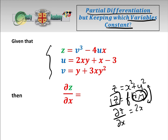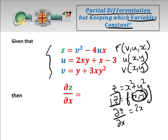But what happens if we have a question like this, where z is a function of v, u, and x, where u is a function of x and y, and v is also a function of x and y? So how do we go about working out what the partial derivative of z with respect to x is? Do we keep u and v fixed even though u and v are themselves functions of x and y, or do we not keep them fixed?